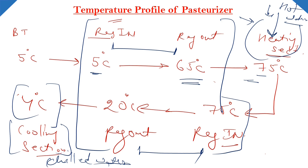Toh steam ki requirement ko kam karne ke liye humne kya kiya? Ek separate section badhaya jiska naam rakha gaya regeneration section. Aur usmein jo pasteurized milk hoga, usse se ham log heat exchange karte hain. Aur isi ki efficiency ham log calculate karte hain - ki kitna temperature regeneration section mein milk ka badha, aur requirement kitna temperature badhane tak thi.